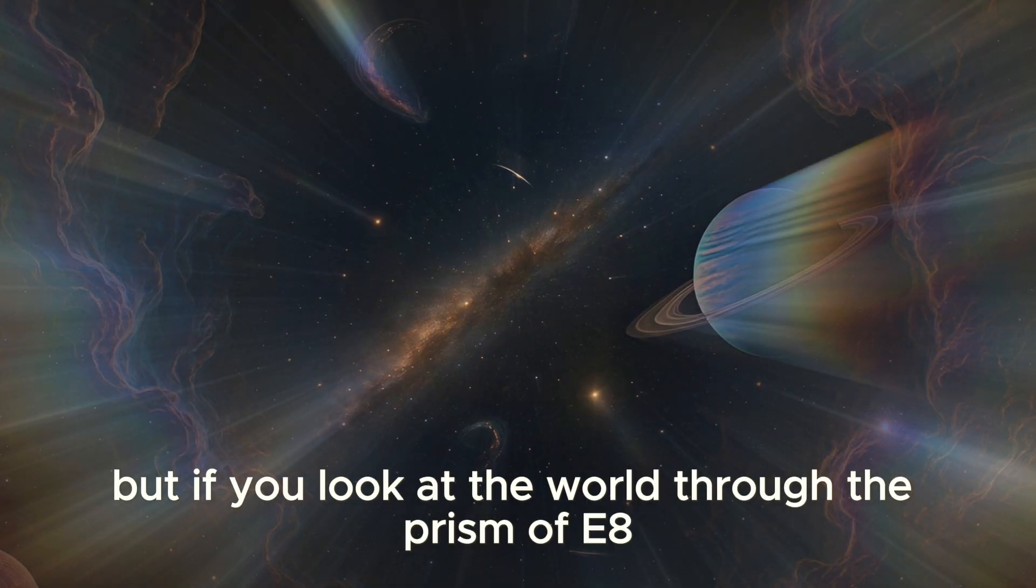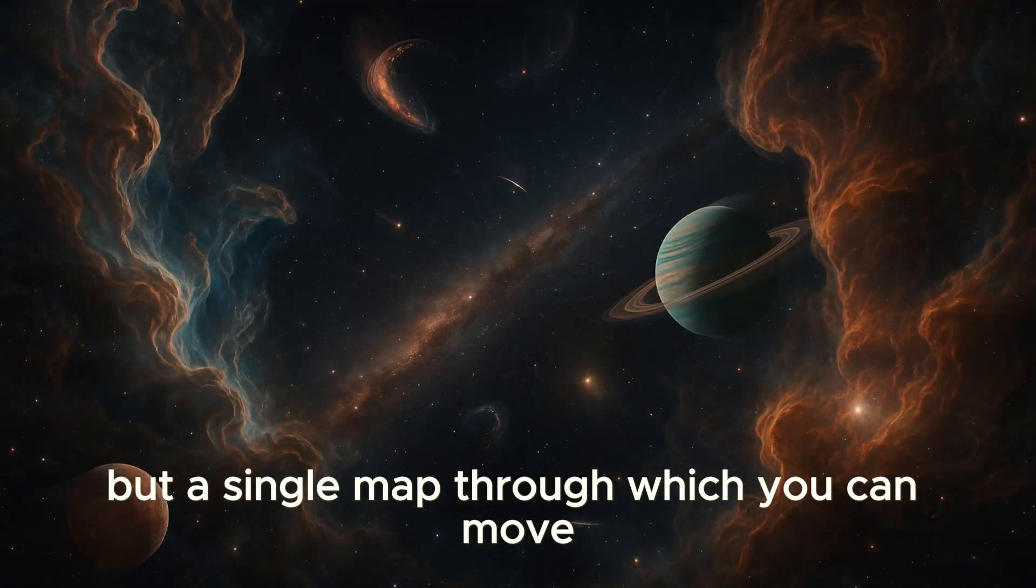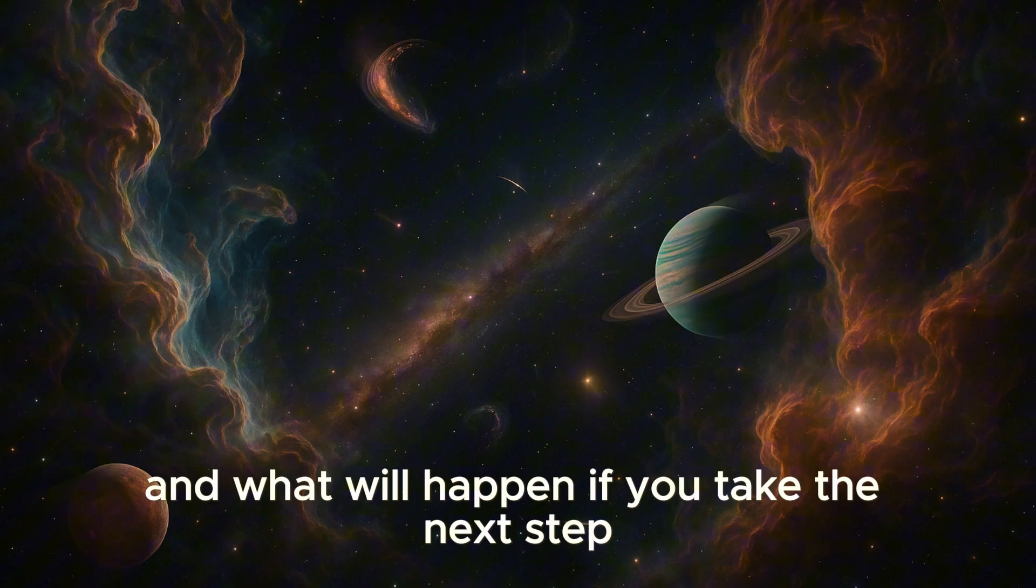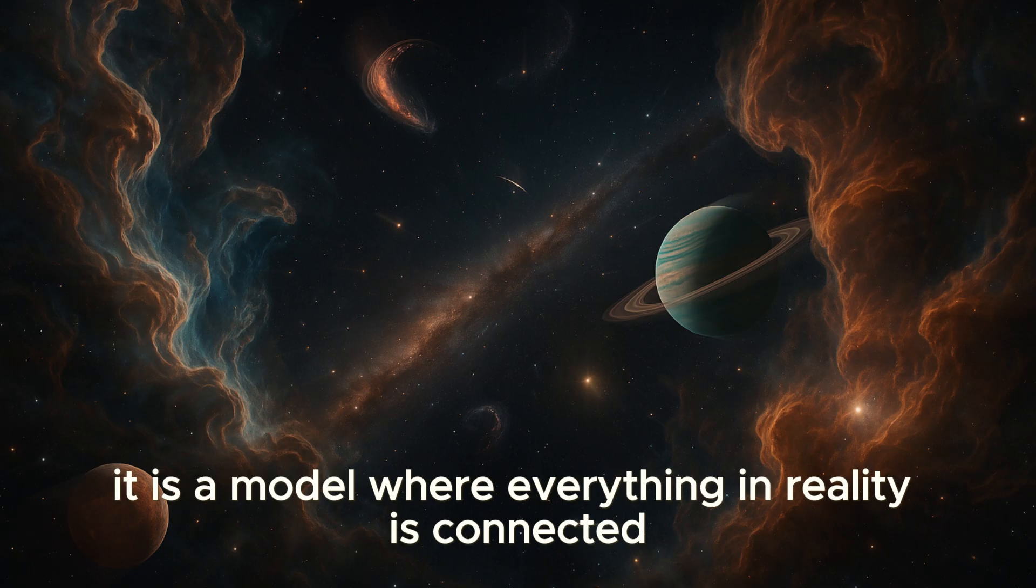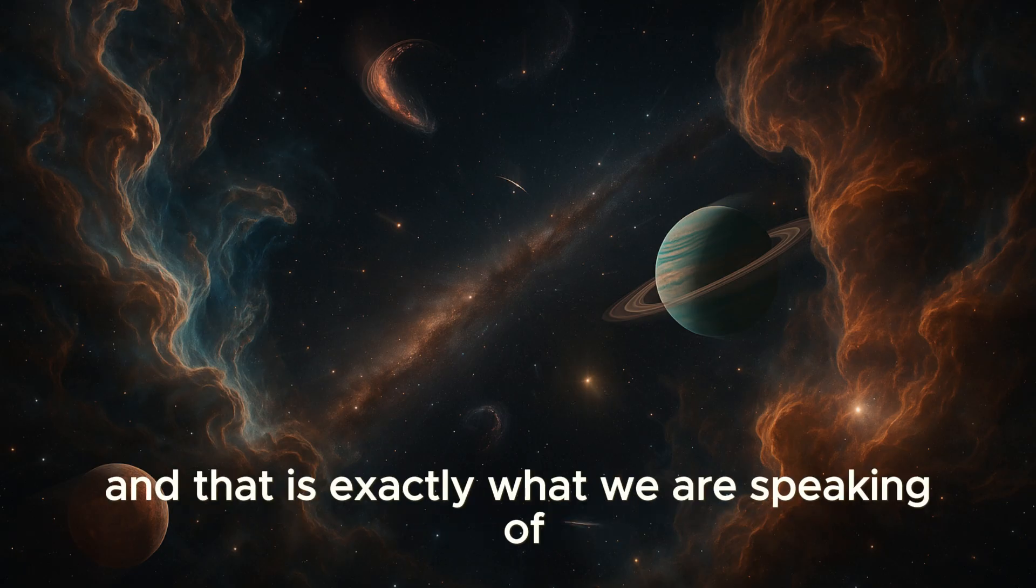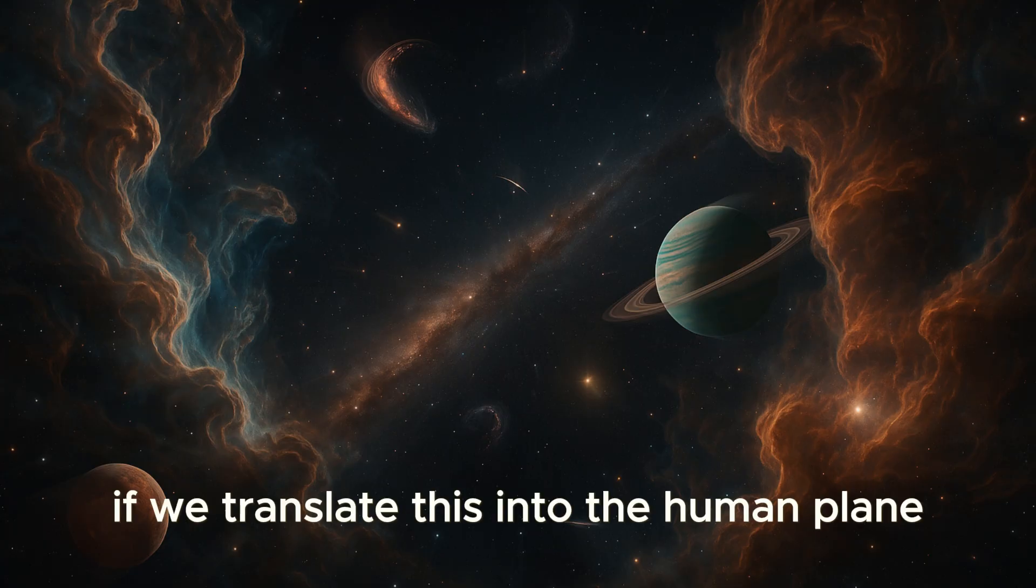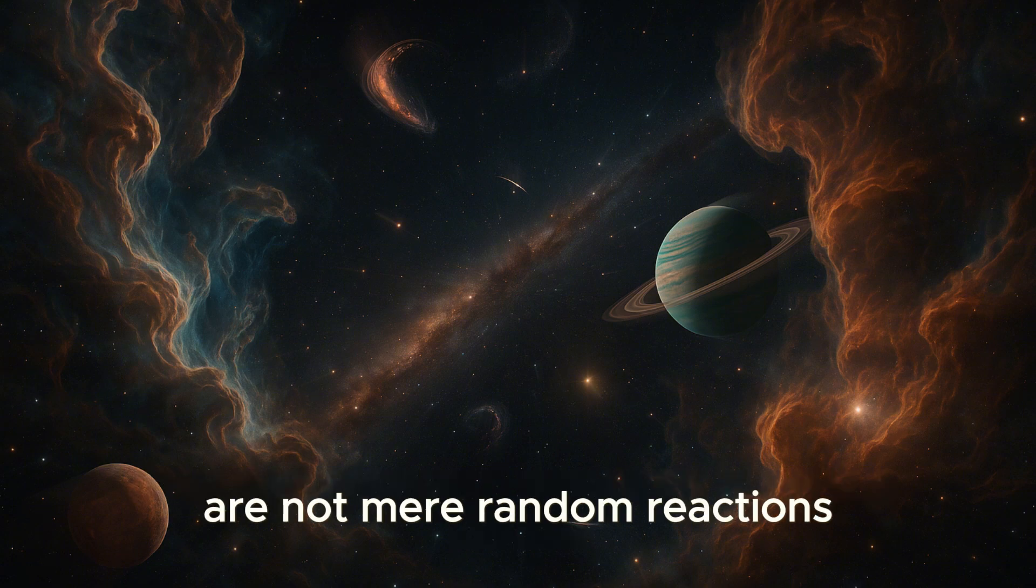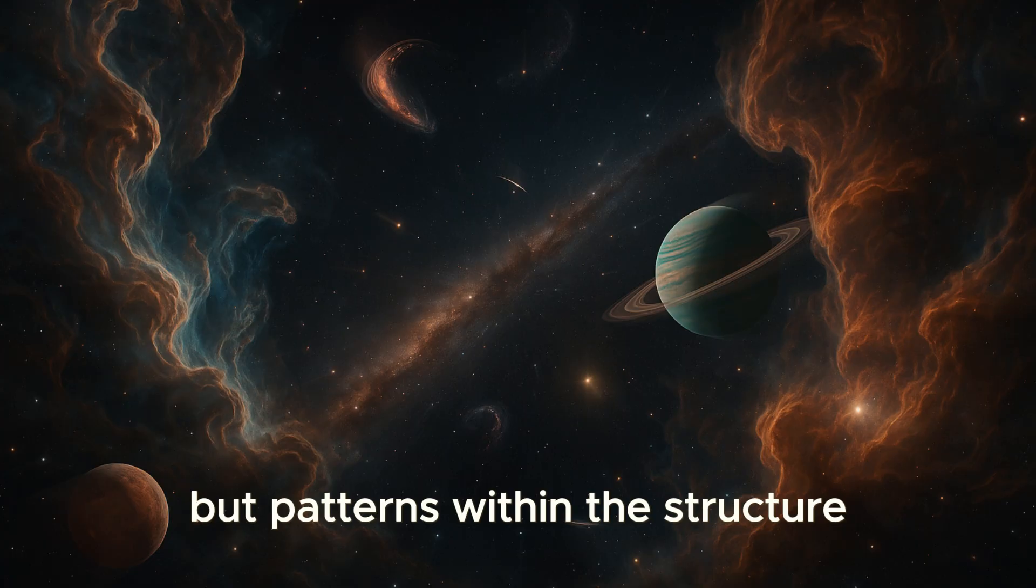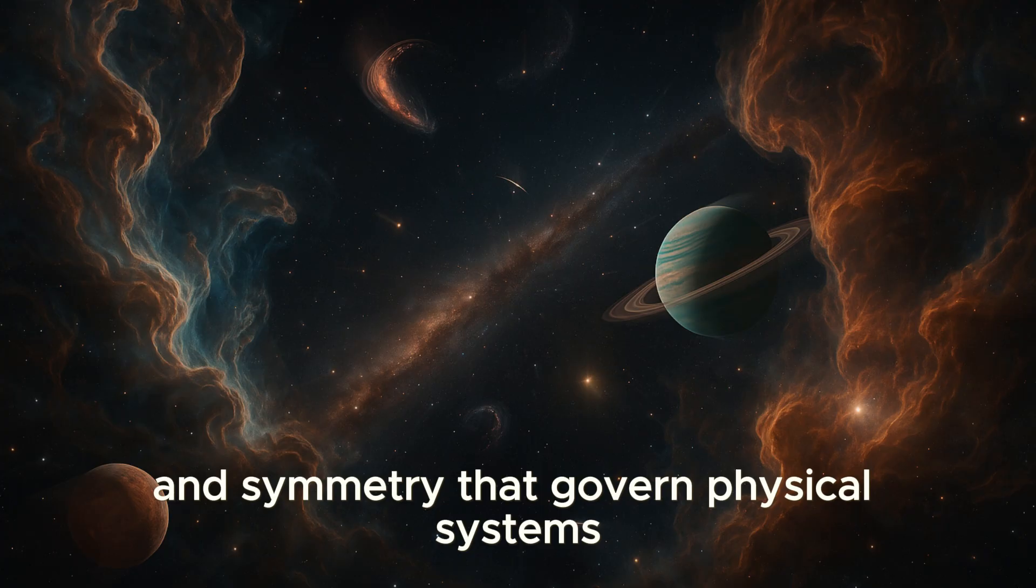But if you look at the world through the prism of E8, it becomes clear. Reality is not a collection of scattered facts but a single map through which you can move, understanding where you are and what will happen if you take the next step. In essence, it is a model where everything in reality is connected through structure and resonance. And that is exactly what we are speaking of when we discuss inner states, emotions, and abilities. If we translate this into the human plane, then thoughts and emotions in such a picture are not mere random reactions but patterns within the structure. They are formed and transformed by the same laws of rhythm and symmetry that govern physical systems.